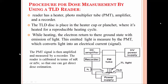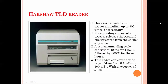The TLD reading procedure involves a DC amplifier, recorder, nitrogen gas for cooling, a photomultiplier tube (PMT), and power supply. The TLD card is placed in the reader, the system is started, and it heats to above 300 degrees Celsius, emitting light or luminescent signals. This is detected by the PMT, which transfers the signal into an electronic reading recorded as your dose. The Harshaw TLD reader is most widely used and costs around two crores.